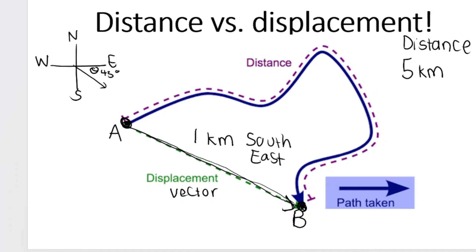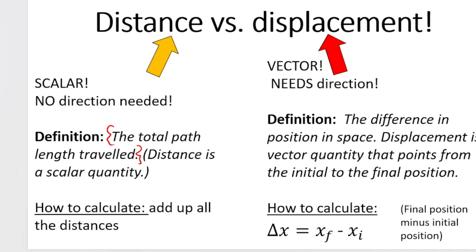For now, I want you to recognize the difference between distance and displacement. We can get very different magnitudes — five kilometers versus one kilometer — but they both give an idea of how this person moved. Distance is a scalar quantity; you don't need direction. Displacement is a vector and needs direction. Distance is the total path length traveled — all the little distances added together. Displacement is the difference in position in space, the change in position. That's what delta x indicates: the triangle means change, and x refers to position.